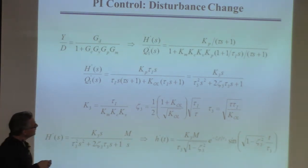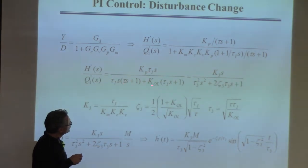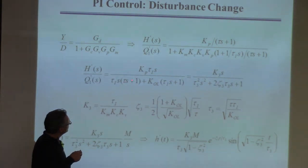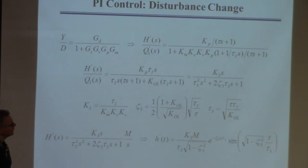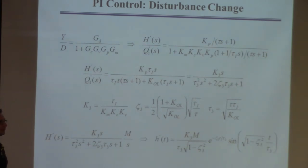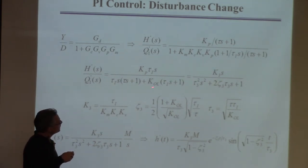If I want it second order in S, I want to write it in the standard form: tau-squared S-squared, two-zeta-tau S plus one. That's what the table will have. So I need to make the coefficient of S-to-the-zero in the denominator equal to one. Currently it's KOL, so I divide both sides by KOL to put it in this form.